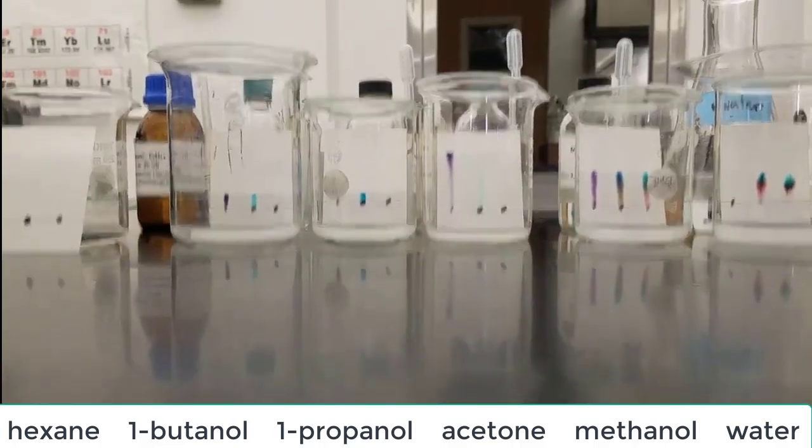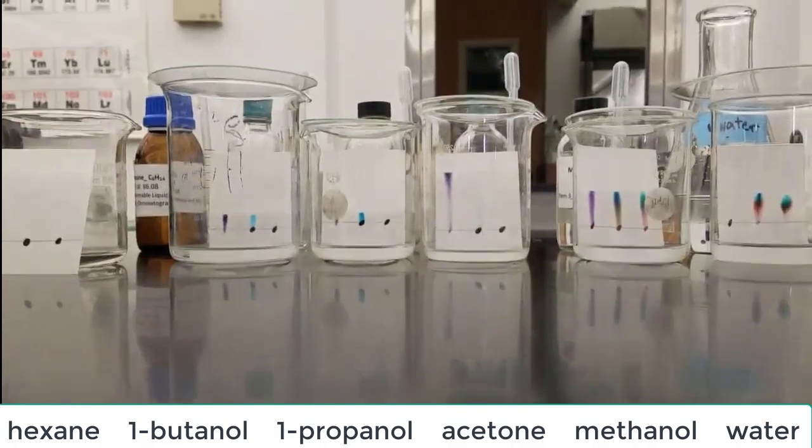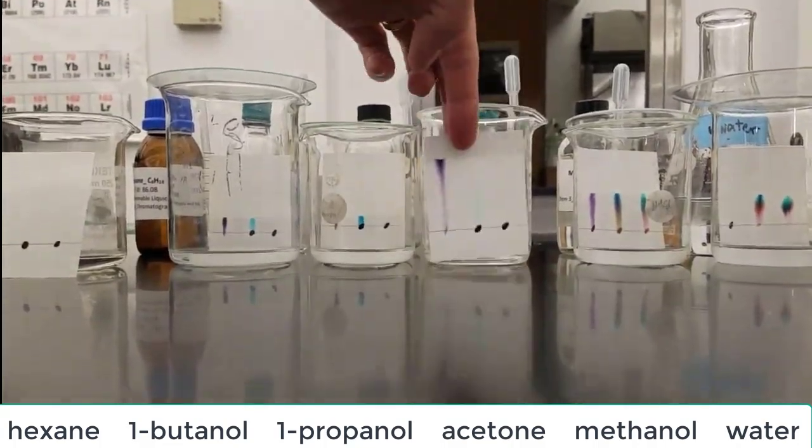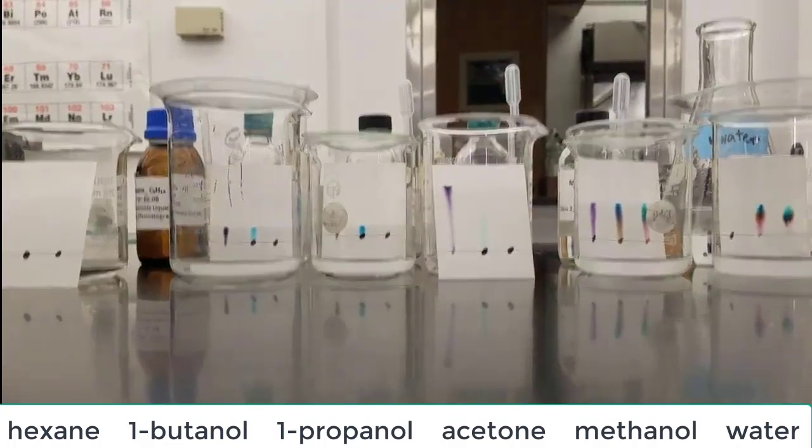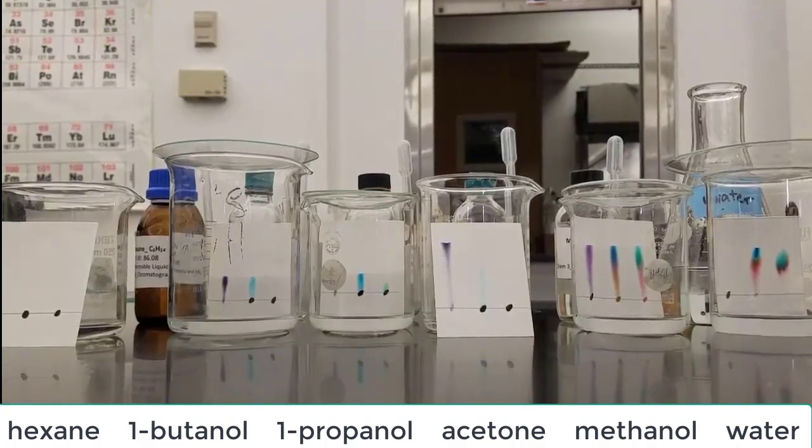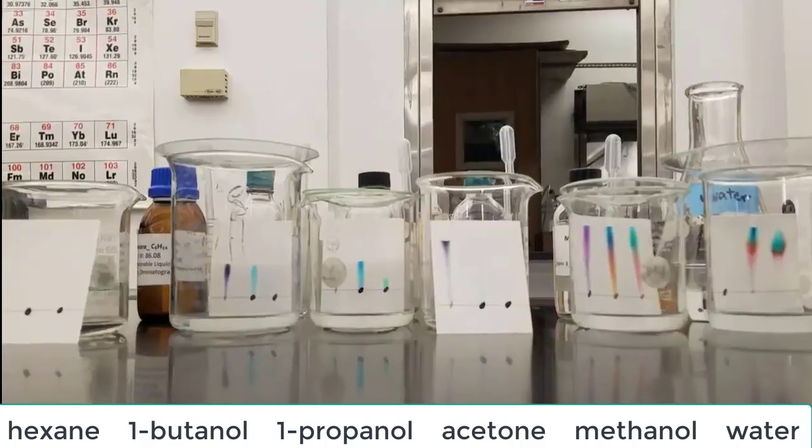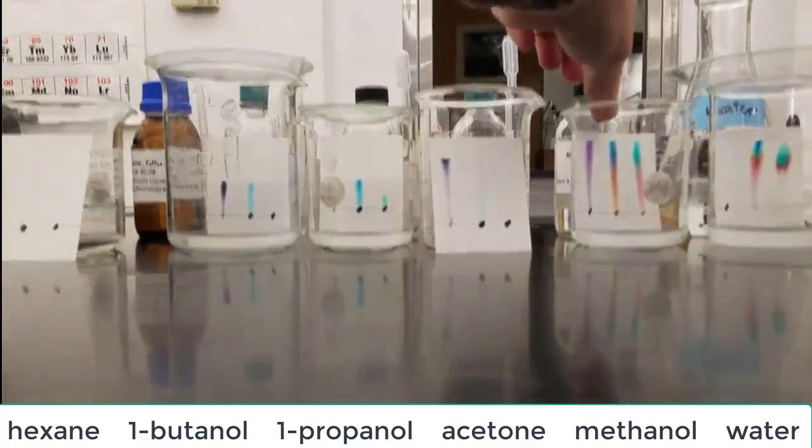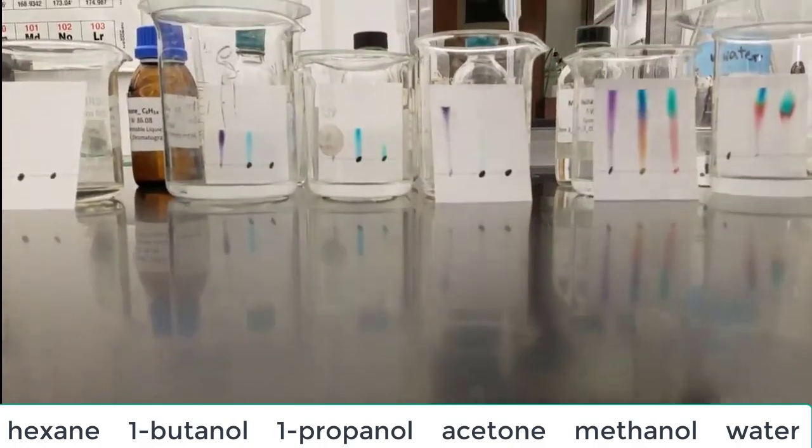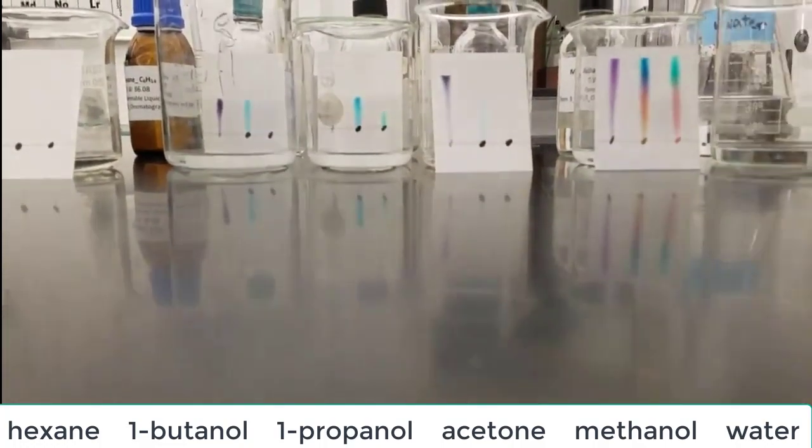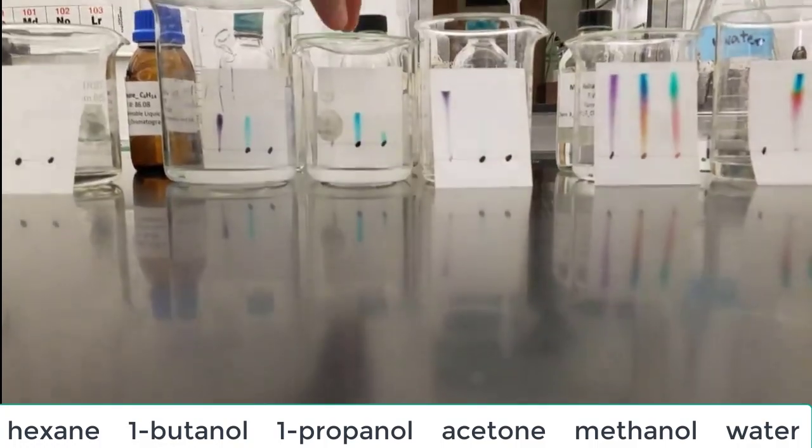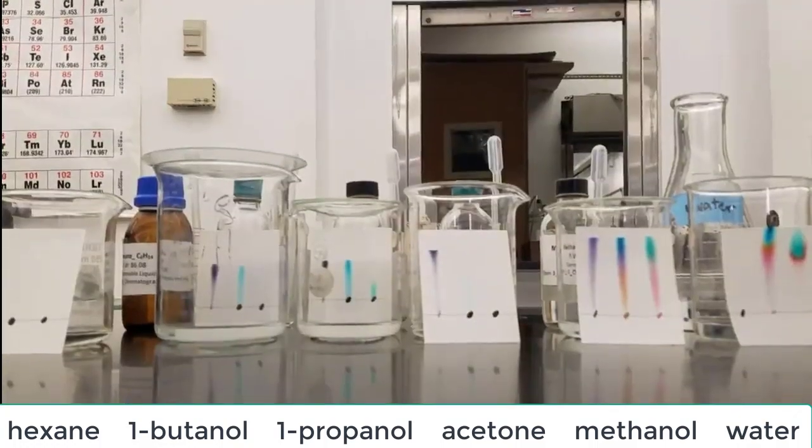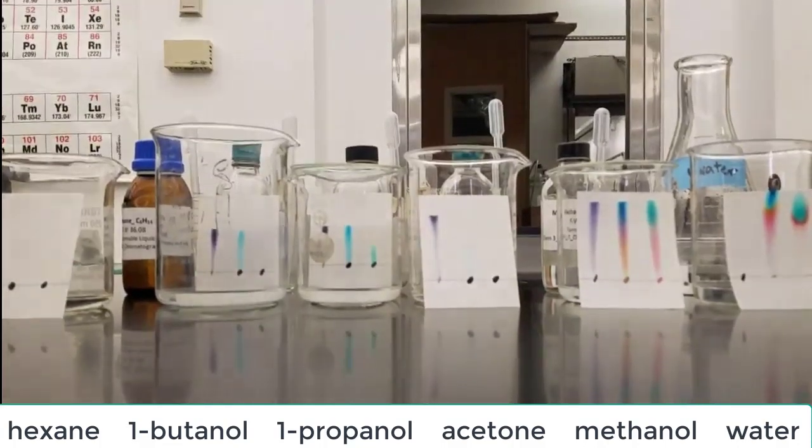As that solvent gets towards the top of each paper, about a centimeter or two from the top, we're going to pull the papers out. There are measurements you can do with these chromatograms that we won't be doing, but in order to measure correctly, you need to pull it out before that solvent runs off the top of the paper. We can see different separations for some of the inks, which shows that it's not all the same pigments in every black ink.